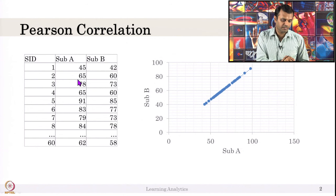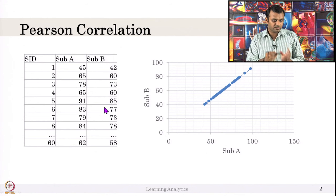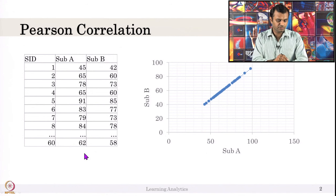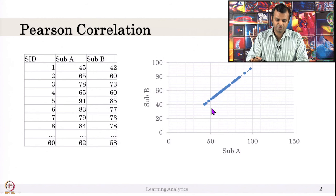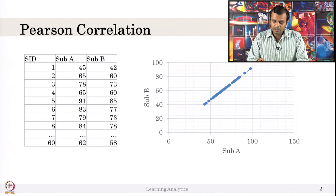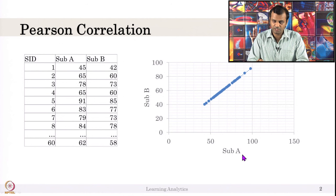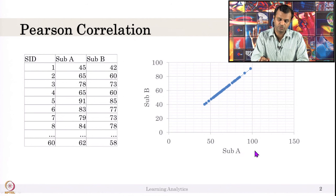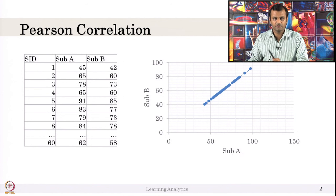If you compute 0.93 into 65, it will come out like that. I created this marks to show there is a linear relationship. It is a perfect linear relationship and the correlation will be positive 1. There is a strong relation between subject A and subject B — a student who scores good in subject A, which is math, will definitely score good in science as well. This can be established.